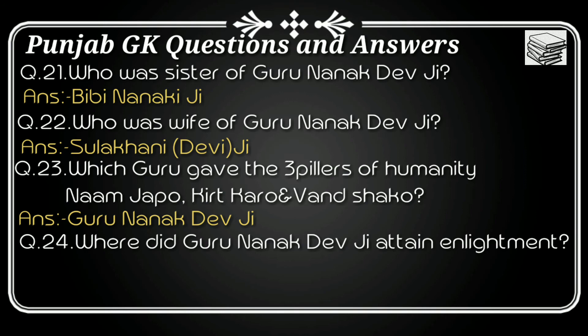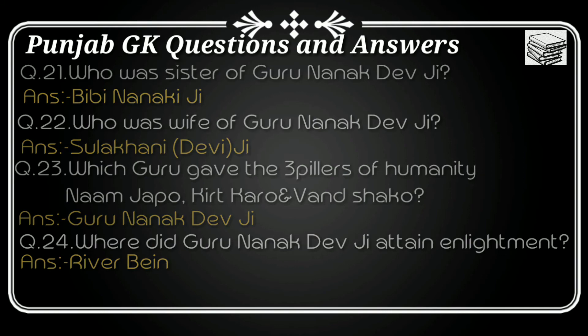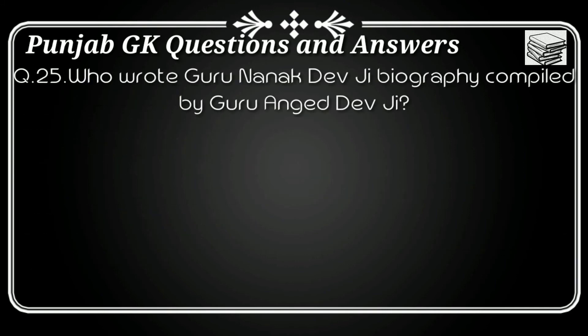Question number twenty four: Where did Guru Nanak Dev ji attain enlightenment? The answer is at River Vein (Bein Nadi). Question number twenty five: Who wrote the biography of Guru Nanak Dev ji, compiled by Guru Angad Dev ji? The answer is Bhai Bala ji.